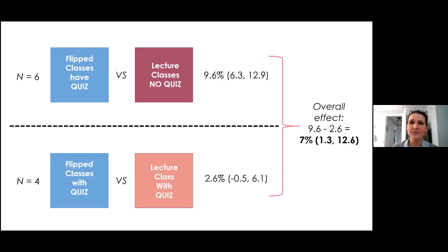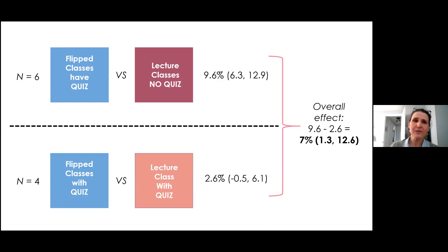Looking at the four studies in which both the flipped class and the lecture class gave students weekly quizzes, the flipped classes had final exam scores only 2.6% higher than the lecture classes. The two confidence intervals do not overlap, so the true effects across these comparisons are likely divergent.